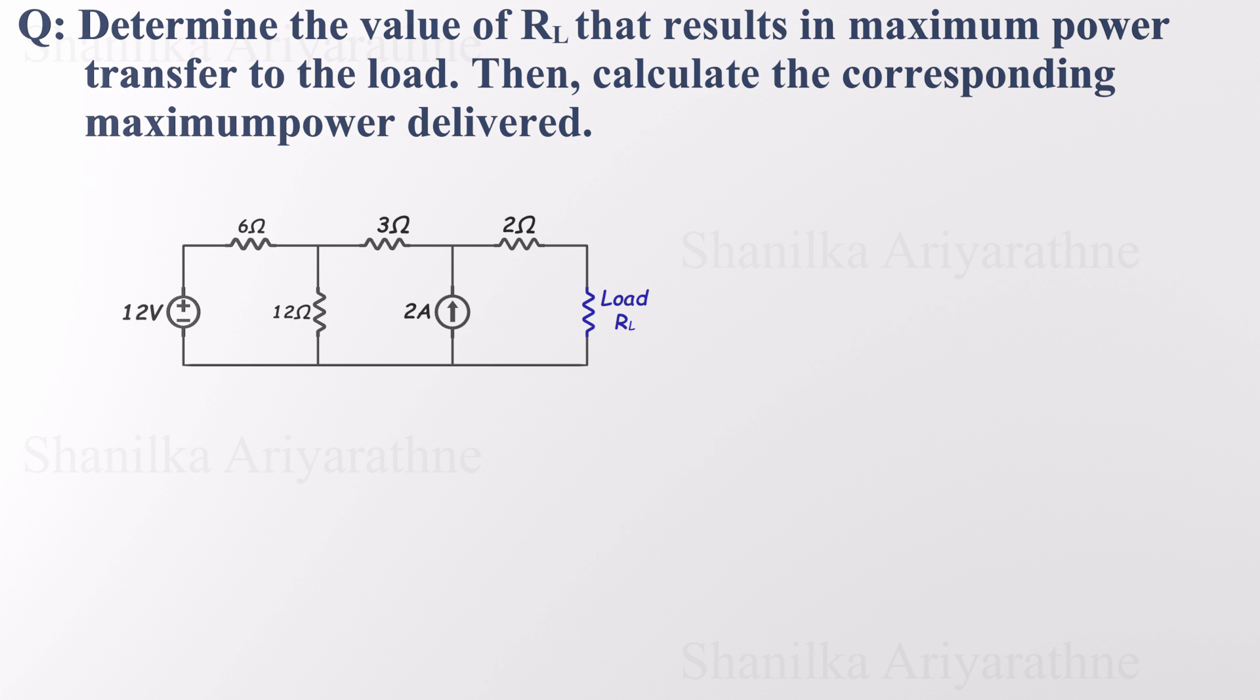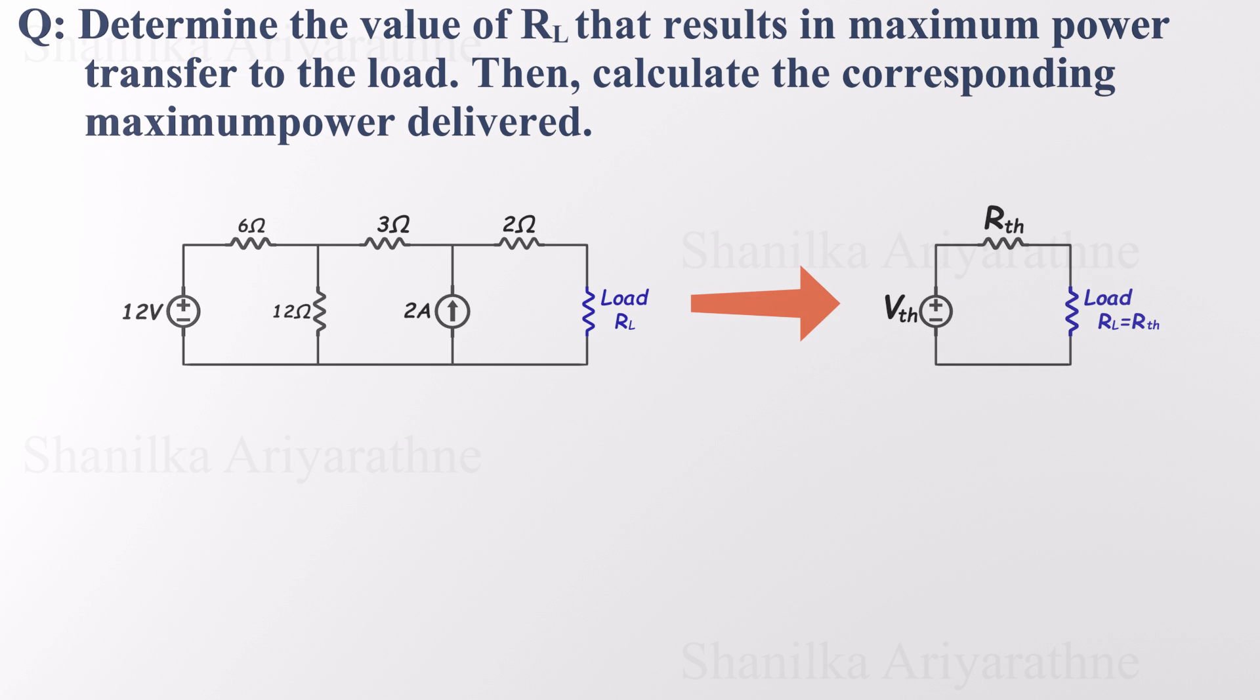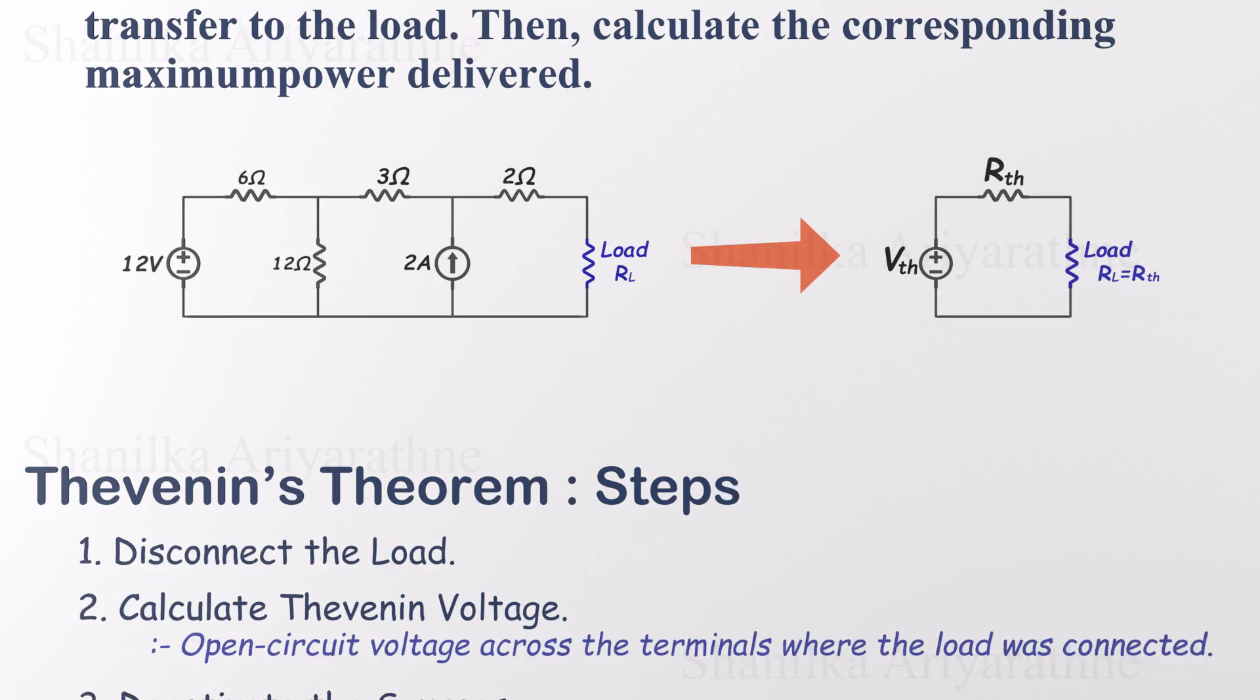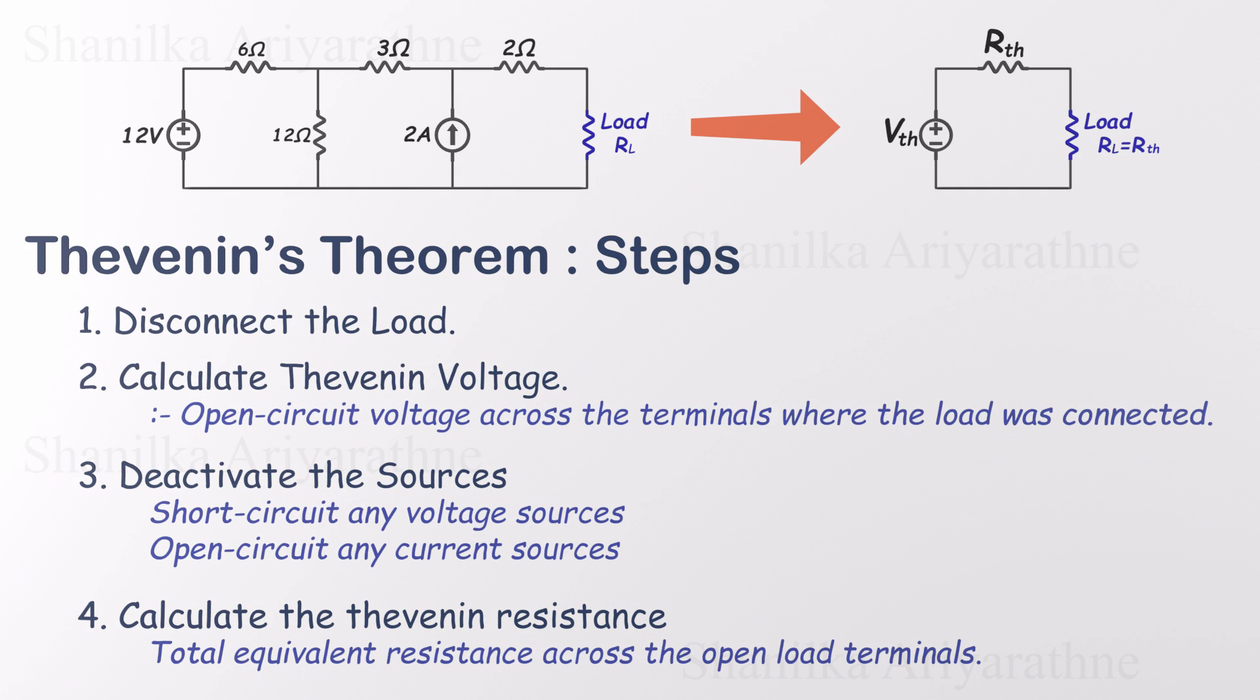Now let's look at an example. This will make everything crystal clear. Suppose we're asked to find the load resistance that can draw the maximum power from a given circuit. As we've discussed, to get the most power, the load resistance must match the Thevenin equivalent resistance of the circuit supplying it. So our first job is to find the Thevenin equivalent of the original circuit. If you're not familiar with how to do that yet, don't worry. We've got a full video breaking it down step by step. Link's in the description. But here's a quick summary of the process, just four steps.